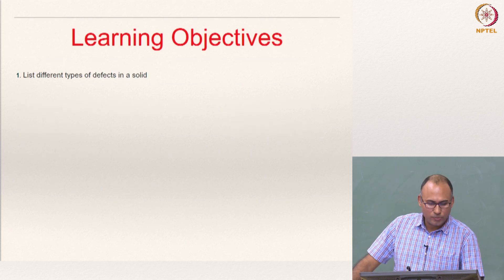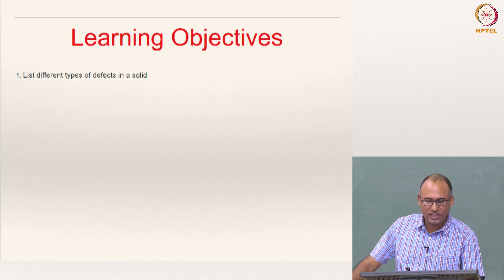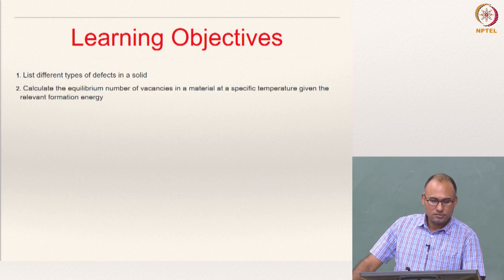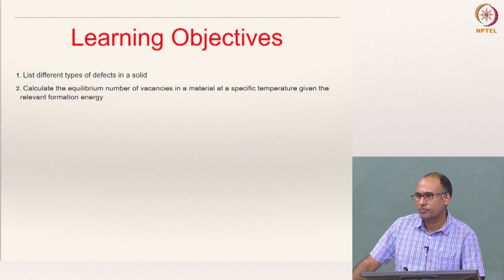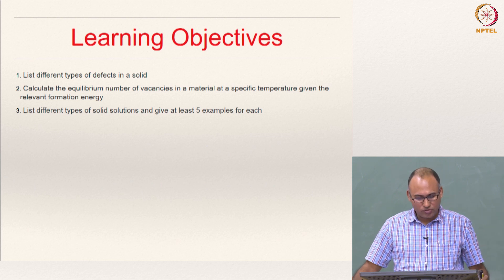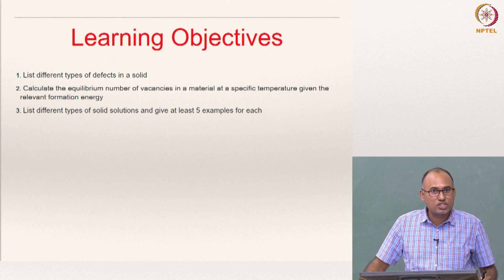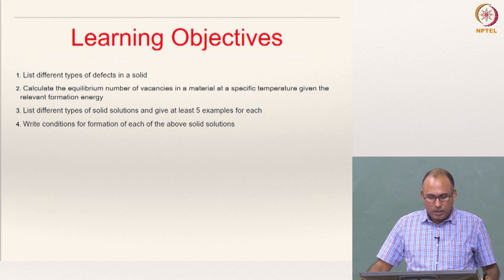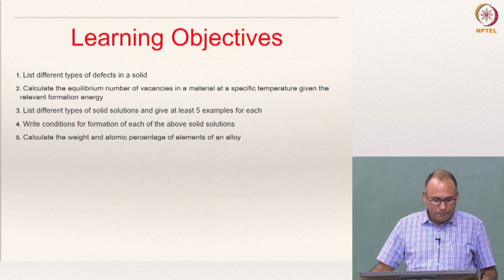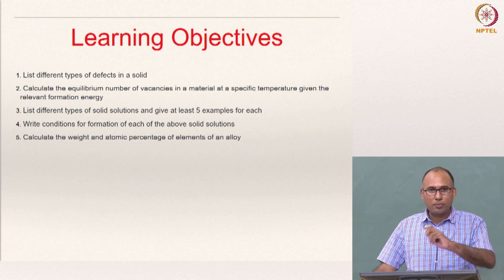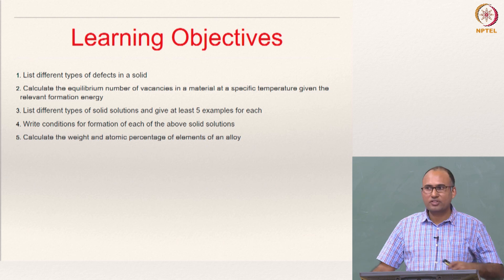So these are the learning objectives. You should be able to list different types of defects in a solid, and we should be able to calculate the equilibrium number of vacancies or concentration of vacancies in a material at a specific temperature, given the relevant vacancy formation energy. You should also list different types of solid solutions and give at least 5 examples for each, and write the conditions for formation of those solid solutions. You should be able to calculate the weight and atomic percentages of elements in an alloy and convert from atom percentage to weight percentage.